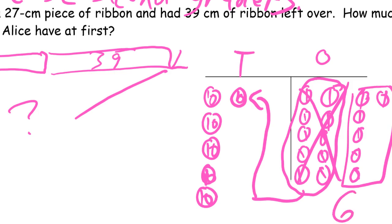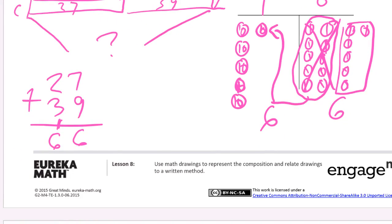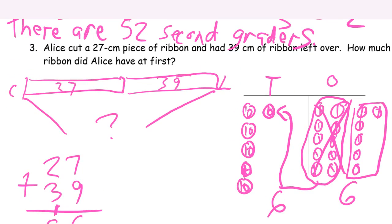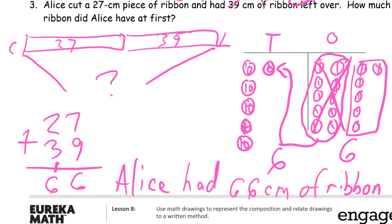Not going to count them twice, and we can see, look at this like it's like a 10-frame, right? Here, so that's a 6. And then we have 6 here, 66. Is that the same as we had for our vertical? Yes, it is, 66. We need an answer statement because this is a word problem. Alice had 66 centimeters of ribbon at first.